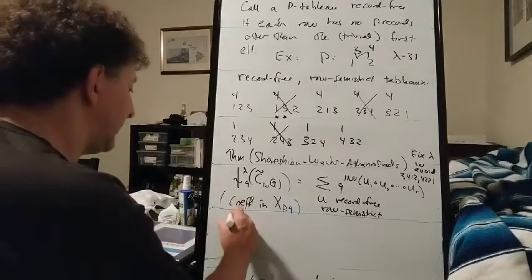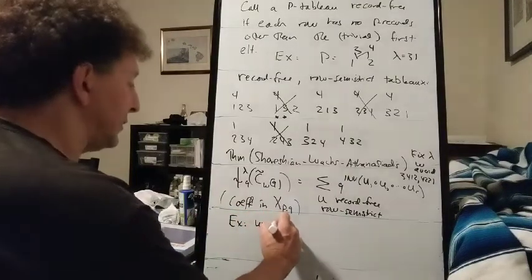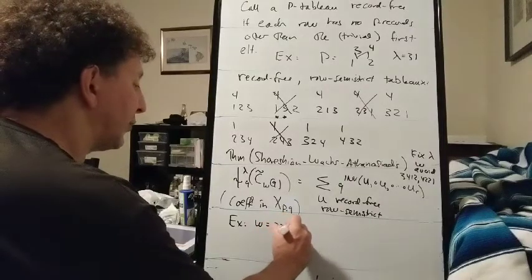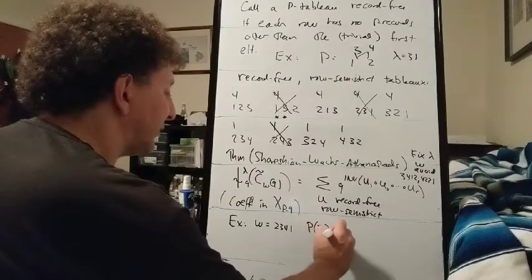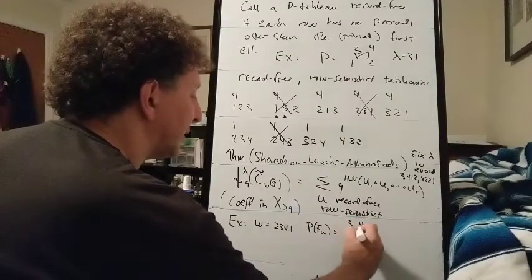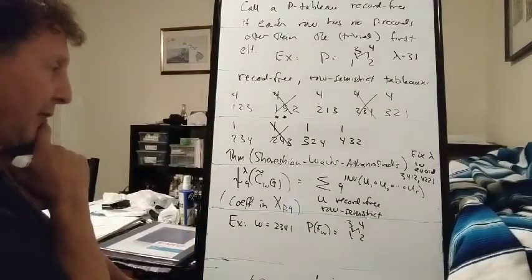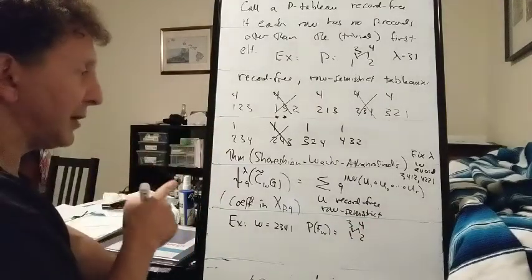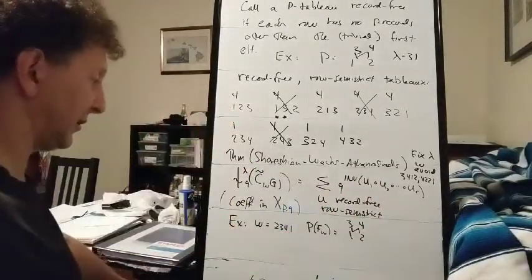So if we apply this, for example, let's let W be 2, 3, 4, 1. So the poset of FW is this poset which we just wrote the tableau for.